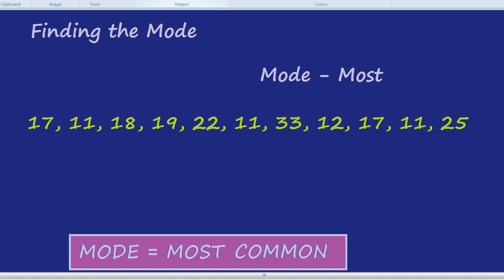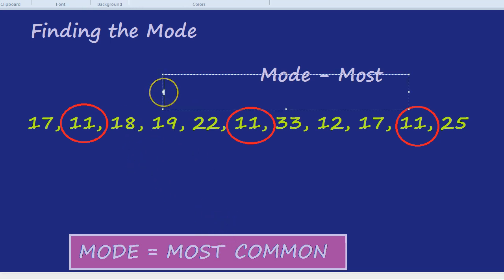Well, you might be thinking 17 because it came up there and it also came up here. But wait. The number 11 came up three times. Did I fool you? Maybe not. But 11 is the mode. Mode means most common. Just think mode most. So mode is the most common. So here the mode is 11.